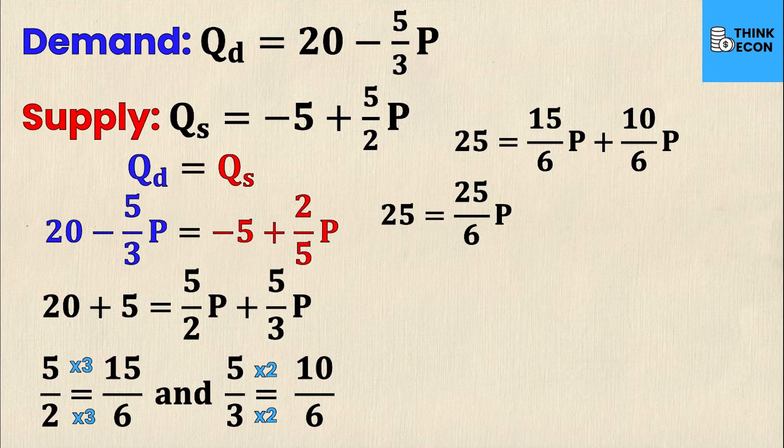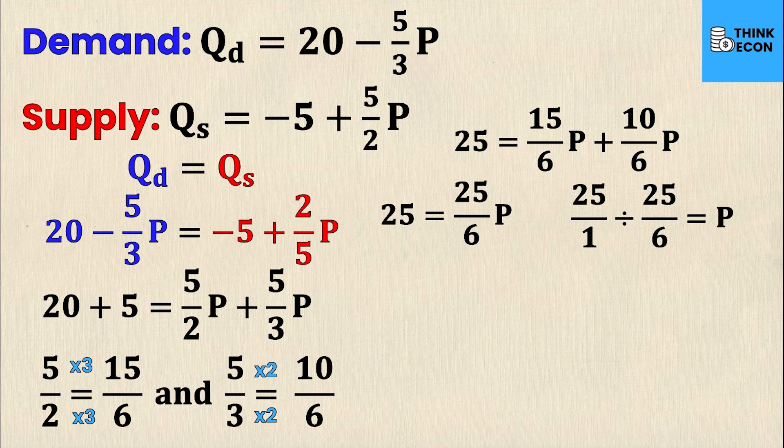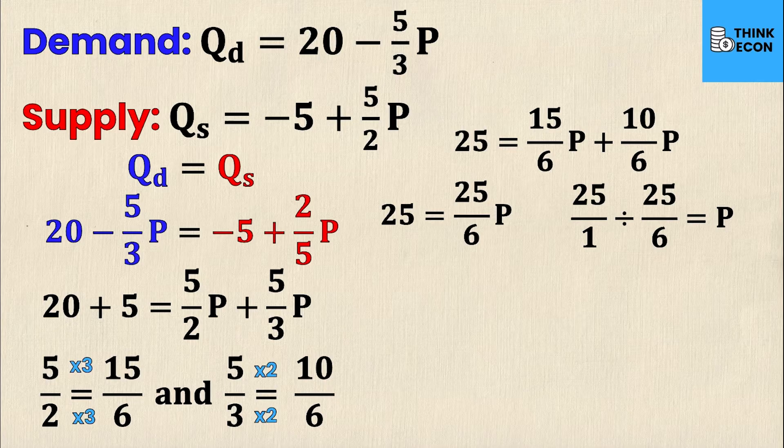This is the second trickiest part where people make a lot of mistakes with fractions. I'm trying to isolate P, which means I need to divide both sides of the equal sign by 25 over 6. 25 over 1, which is just 25, divided by 25 over 6 equals P. The P value is now isolated because 25 over 6 divided by 25 over 6 is just 1.